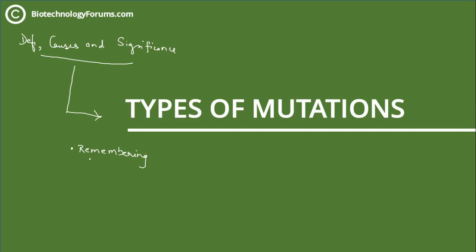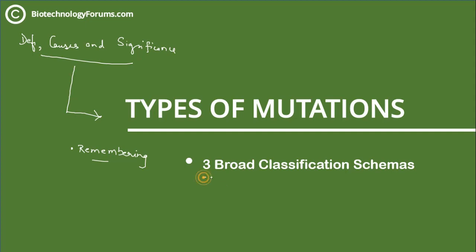I will go into the details of all the types of mutations in subsequent videos, but for now our main focus is to understand how the various types of mutations emerge — what is the basis of their classifications. We will do this in an interesting way by dividing all the types of mutations into three broad classification schemes, and in the end we'll have a study map for mutations so you can have all types listed on a single page in an easy-to-memorize manner.